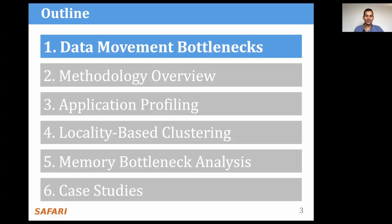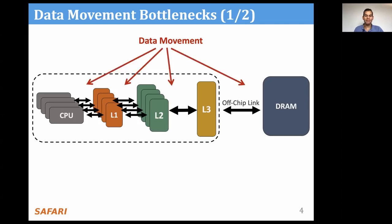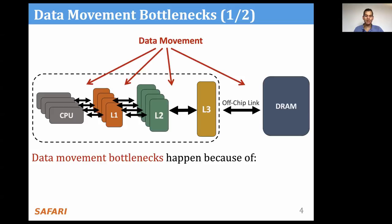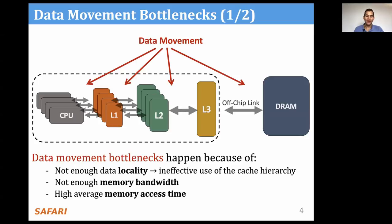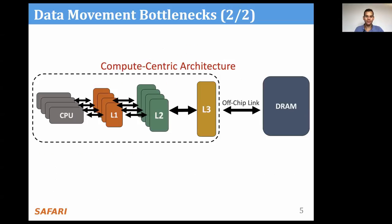So, let's get started with data movement bottlenecks. Data movement is a major source of inefficiency in today's systems. It becomes a problem because of at least three different reasons: because the application does not have enough data locality and thus does not make effective use of the cache hierarchy; second, because the memory device cannot provide enough bandwidth for the application; and third, because the application or system cannot tolerate the high average memory access time associated with accessing DRAM.